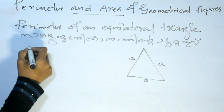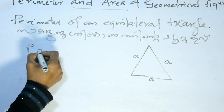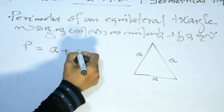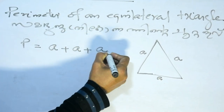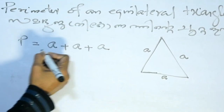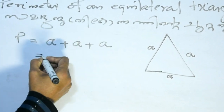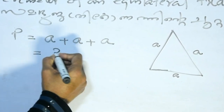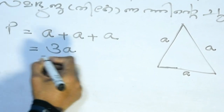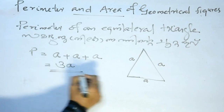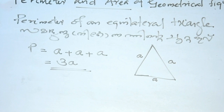Perimeter P equals A plus A plus A, that is A plus A plus A. Since A appears 3 times, the perimeter equals 3A.